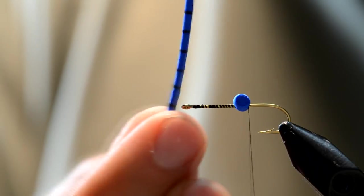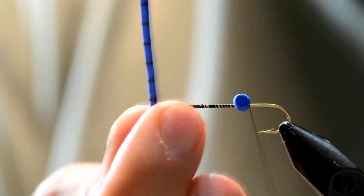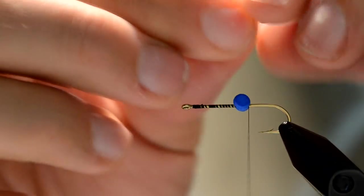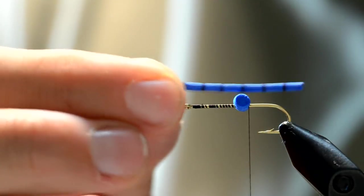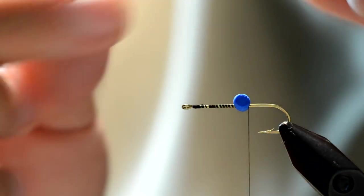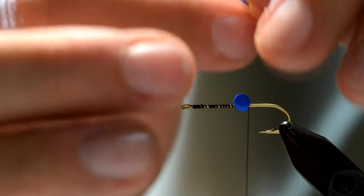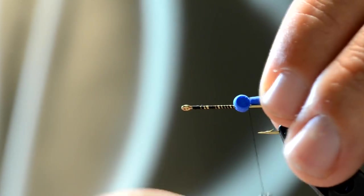Then I just take my Sharpie marker and I color the black bands on it. I want that a little bit longer than the hook shank and just kind of to match the size of the naturals wherever you're fishing.